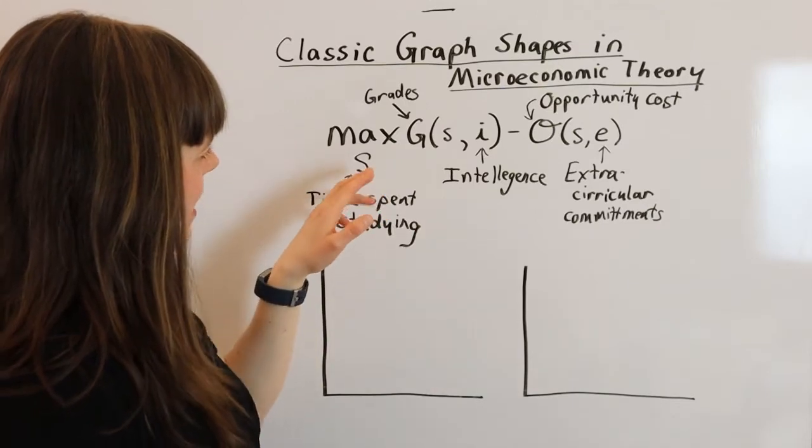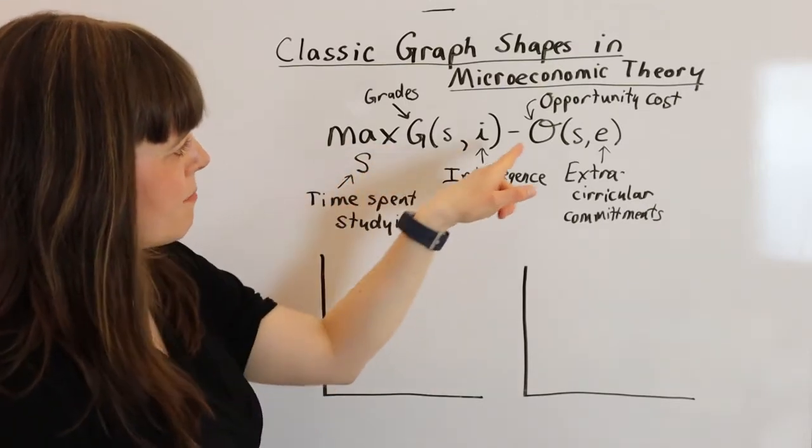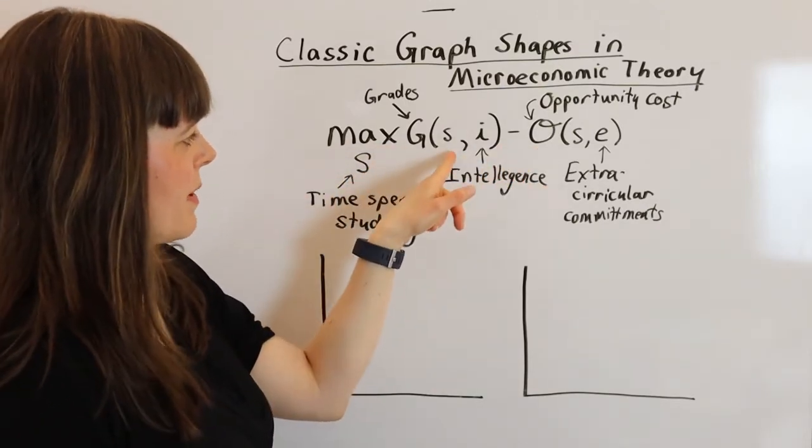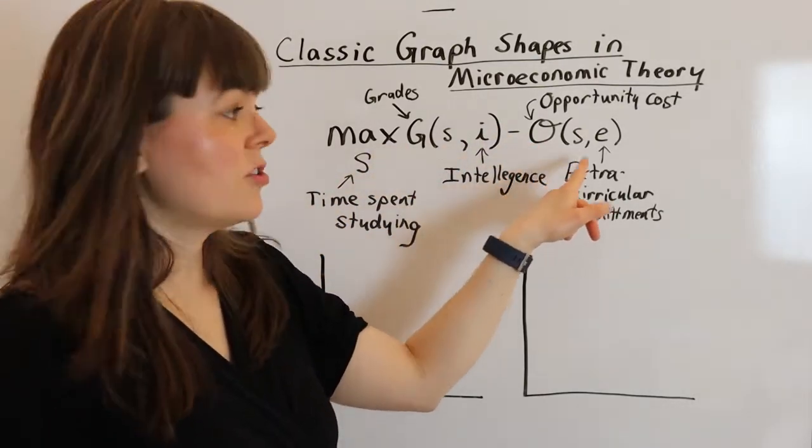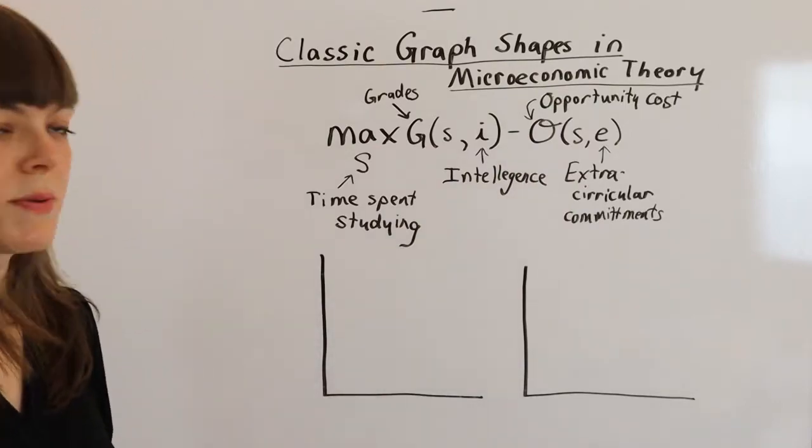And so we've got, it's a classic benefit minus cost model, where the benefit depends on how much time we spend studying, grades depends on how much time we spend studying, and the opportunity cost depends on how much time we spend studying.